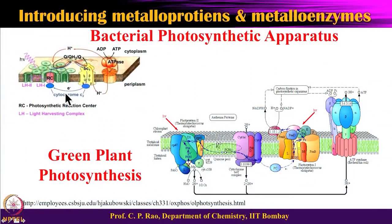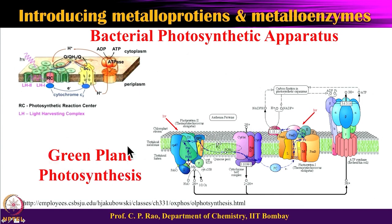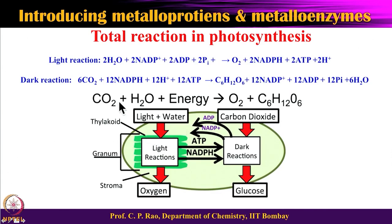The last enzyme in the manganese series is the bacterial photosynthetic apparatus — specifically photosystem II. As inorganic chemists, we are interested in the region where oxygen is evolved: water going to O2 at the manganese cluster in photosystem II. In photosynthesis there are two parts of the reaction: the light-driven reaction and the dark reaction.